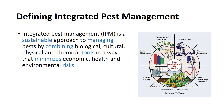Integrated pest management, IPM, as defined by the U.S. Code, is a sustainable approach to managing pests by combining biological, cultural, physical, and chemical tools in a way that minimizes economic, health, and environmental risks. IPM programs emphasize ecosystem-based strategies that provide economical, long-term solutions to pest problems. Pesticides are used only when they are necessary to prevent imminent loss or damage to the managed resource. IPM strategies thus minimize hazards to human health, the environment, and non-target organisms.